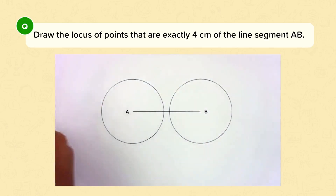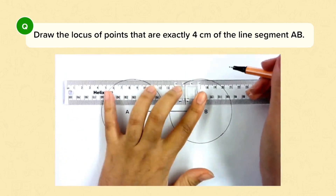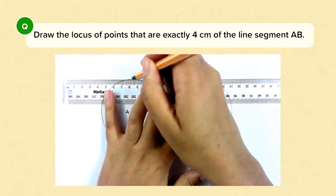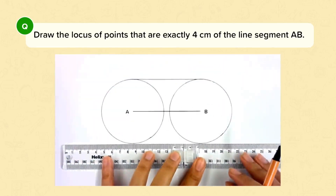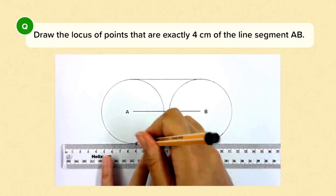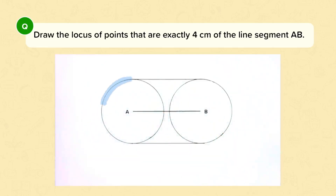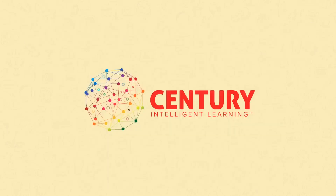Now I can join the top of the circle on the left to the top of the circle on the right, like this, and then I'll do the same for the bottom of each circle. So now this line around the outside represents the locus of points that are exactly four centimetres from the line segment AB.